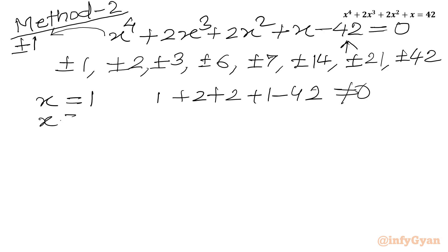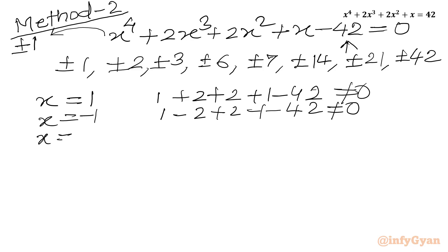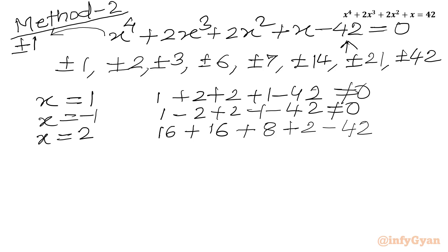Let us plug in x = 2: 2⁴ + 2·2³ + 2·4 + 2 − 42 = 16 + 16 + 8 + 2 − 42 = 42 − 42 = 0. So x = 2 is a root of this quartic equation.